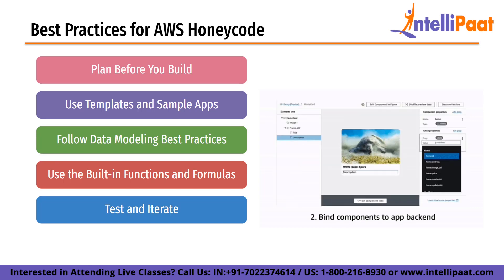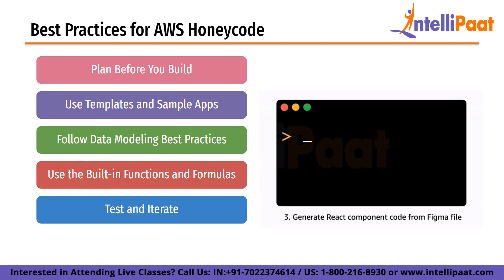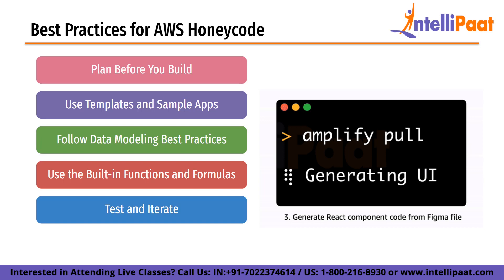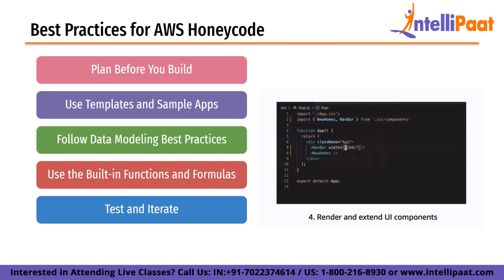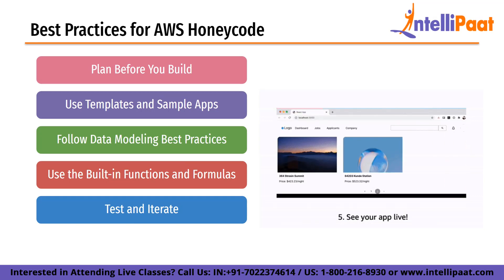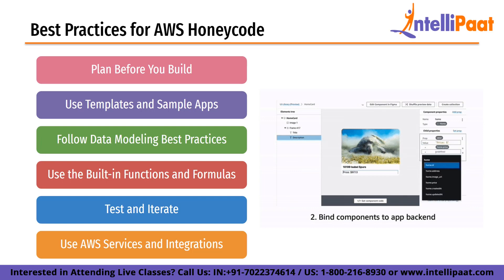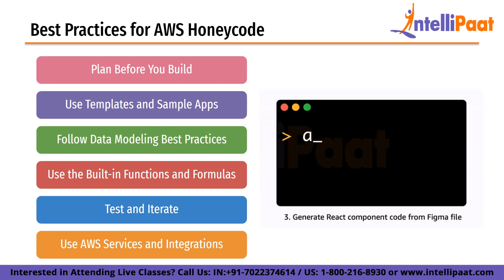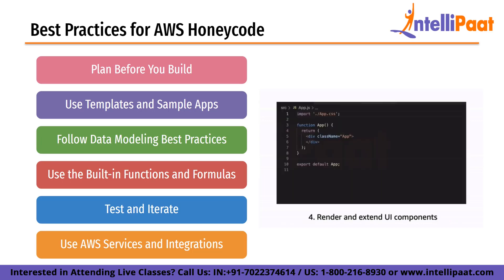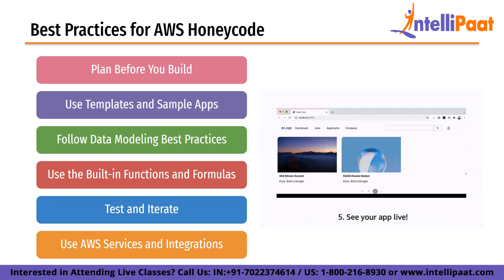Test and iterate. Testing and iterating are important aspects of app development. It is important to test the app thoroughly before releasing it to users. User testing can help identify usability issues and areas for improvement, and iterating based on user feedback can lead to an app optimized for the user's needs. Finally, use AWS services and integrations. Honeycode can be integrated with other AWS services such as Lambda, API Gateway, and S3 to provide additional flexibility and scalability.